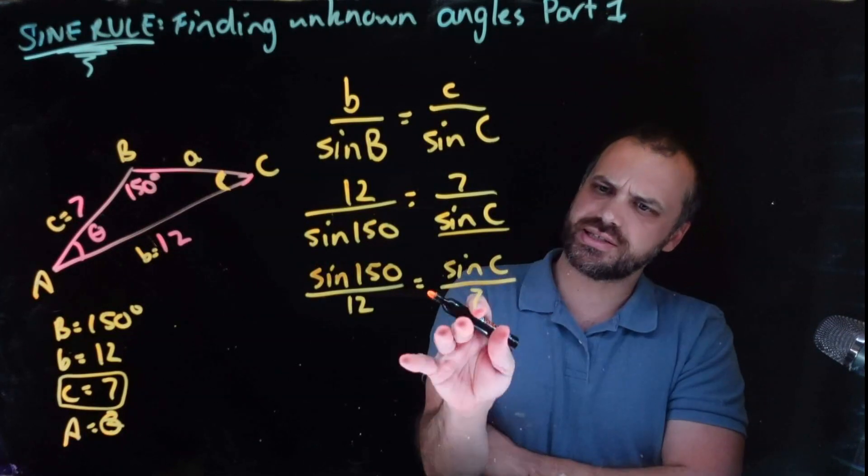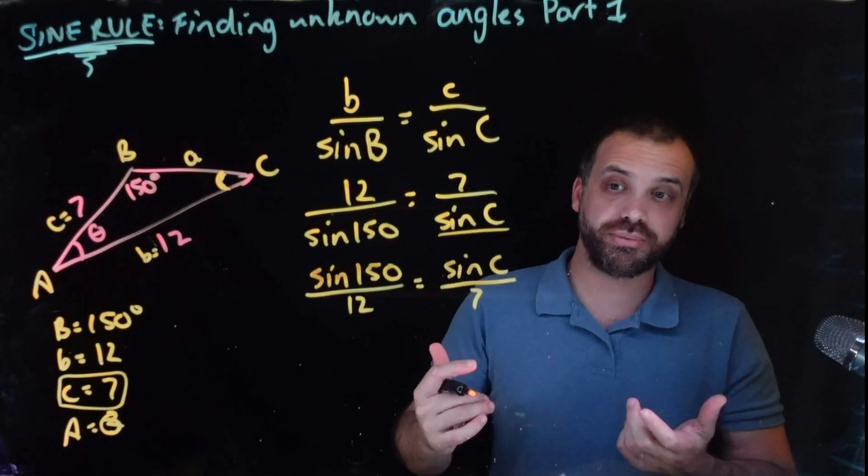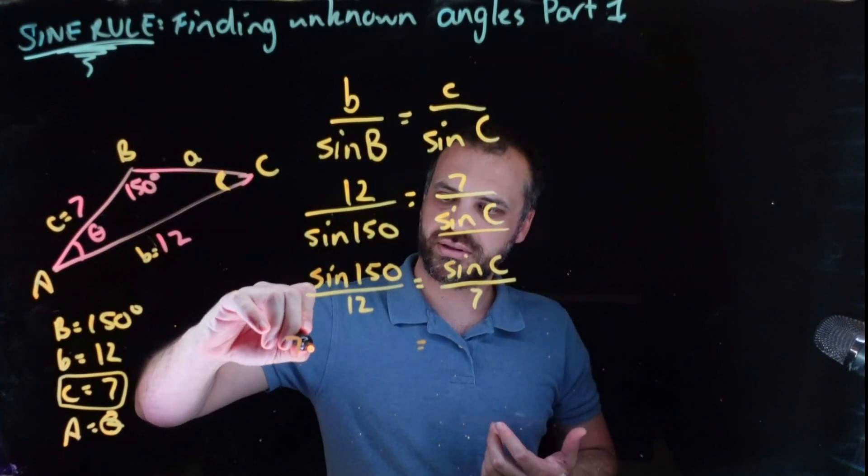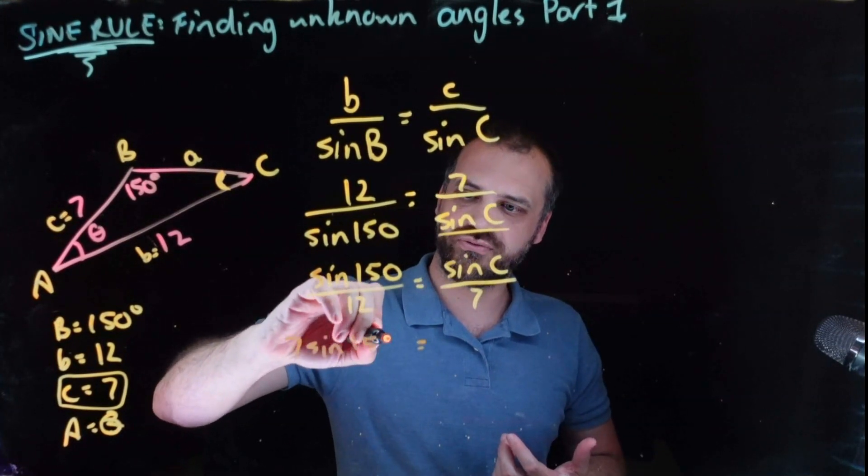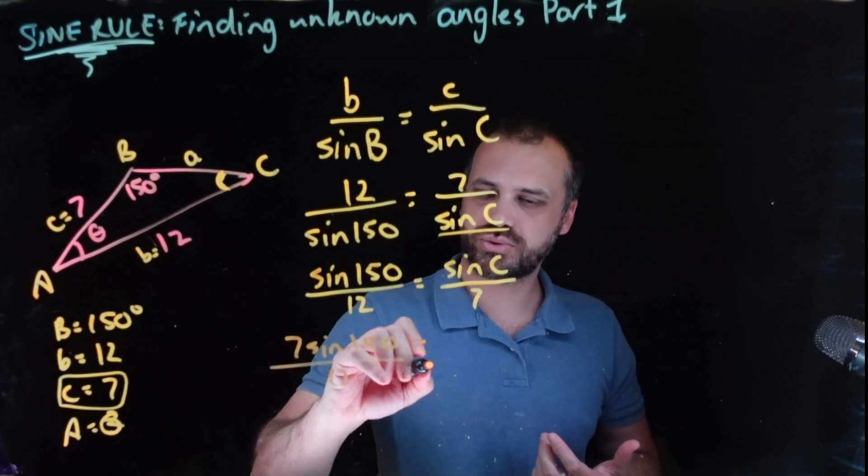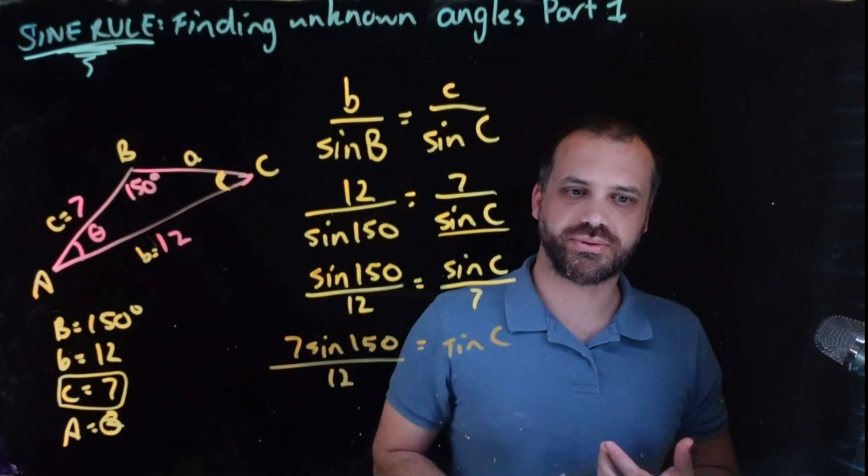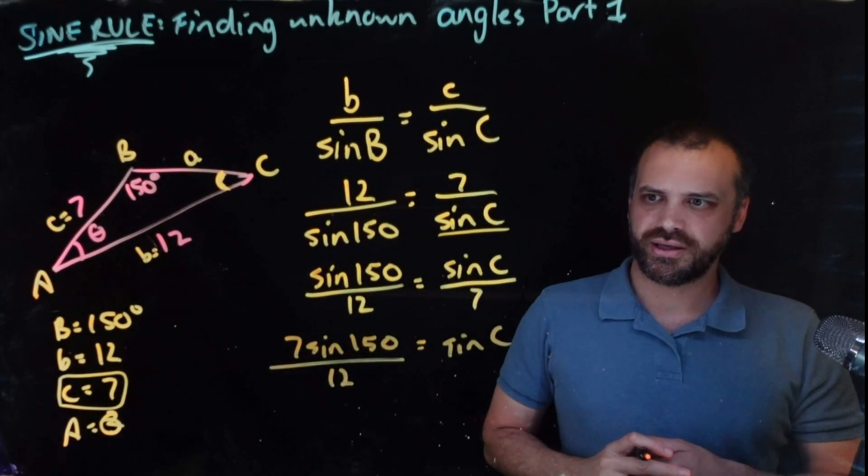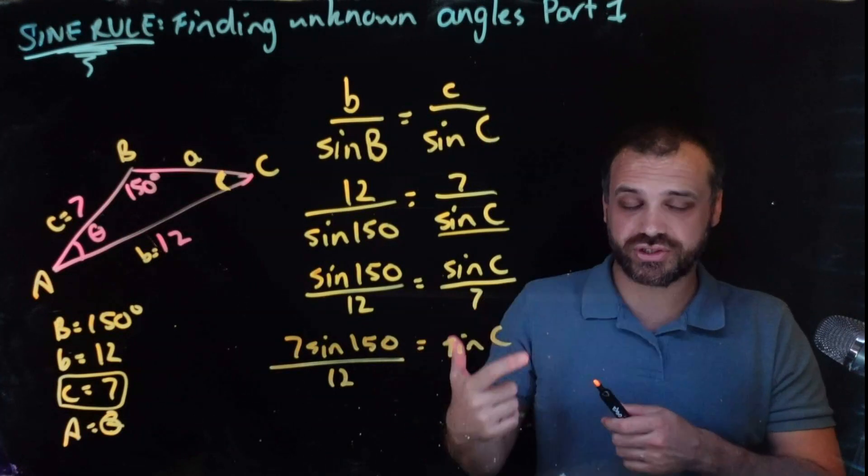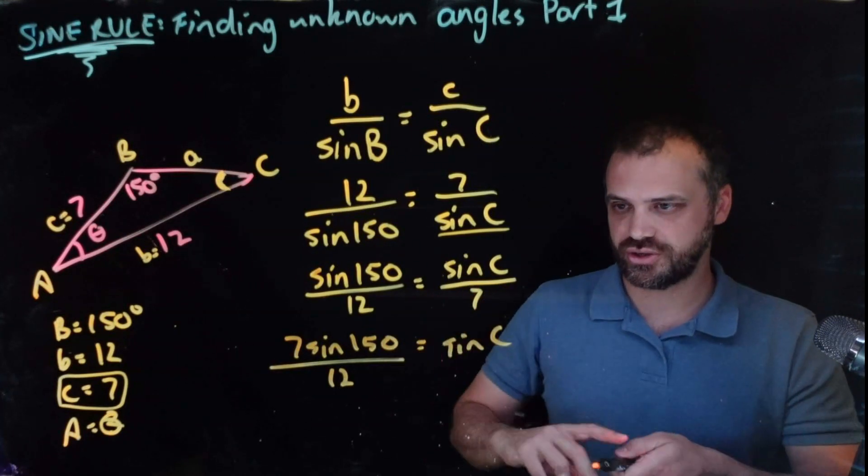Okay, this seven's causing me an issue, so I can multiply both sides by seven. Seven sine 150 over 12, and that's equal to sine C. And then we need to get rid of this sine. And to get rid of a sine, you do inverse sine.